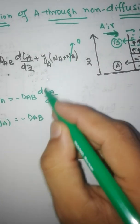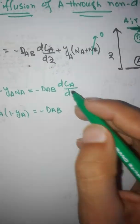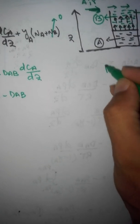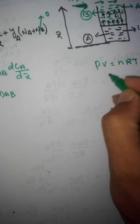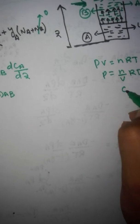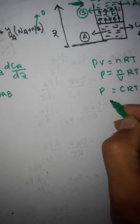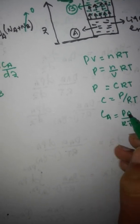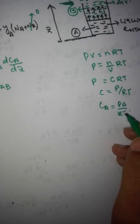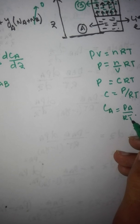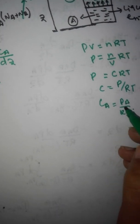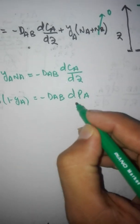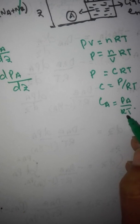For gases, concentration can be written in terms of partial pressure. From the ideal gas law, PV equals nRT, so concentration equals P divided by RT. Therefore, CA equals PA divided by RT. We can substitute DCA with DPA divided by RT.